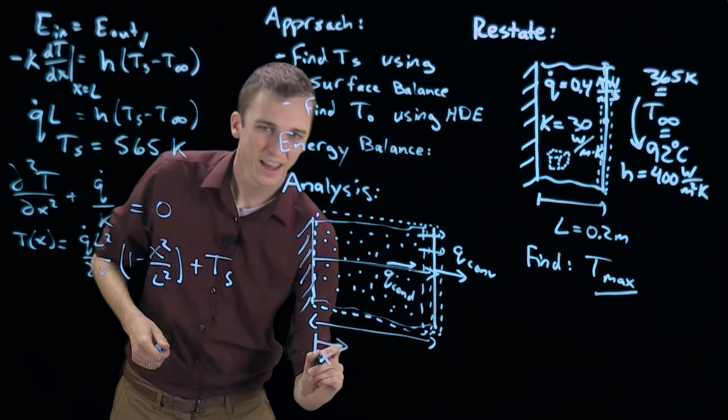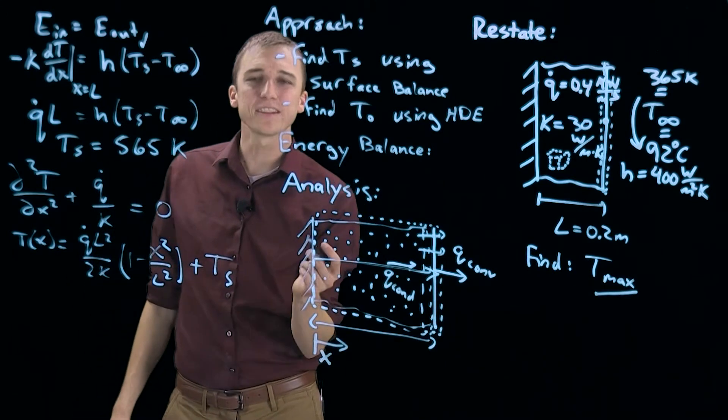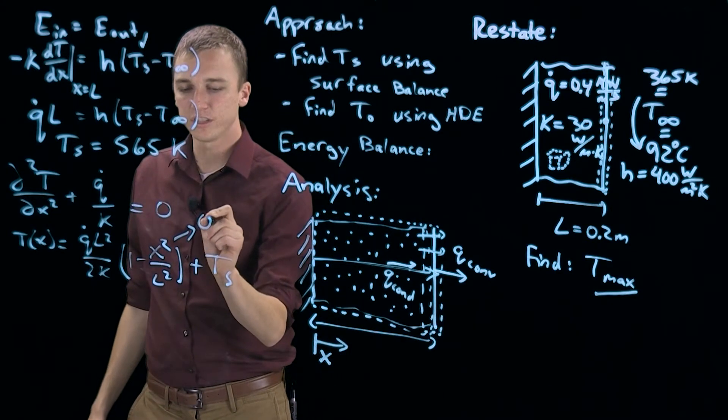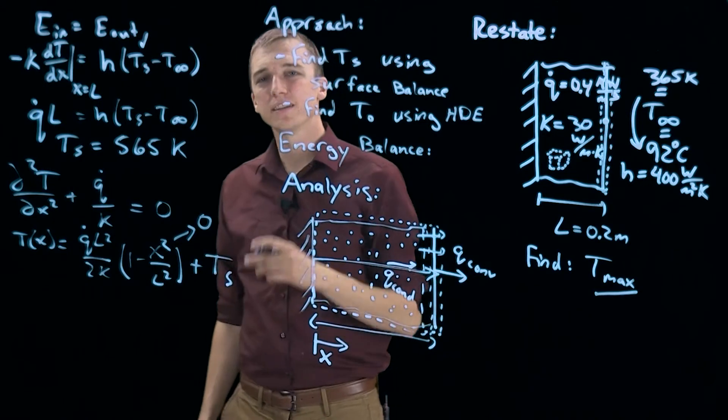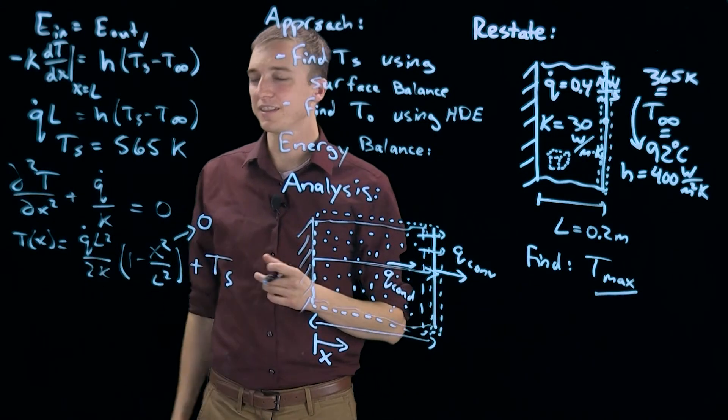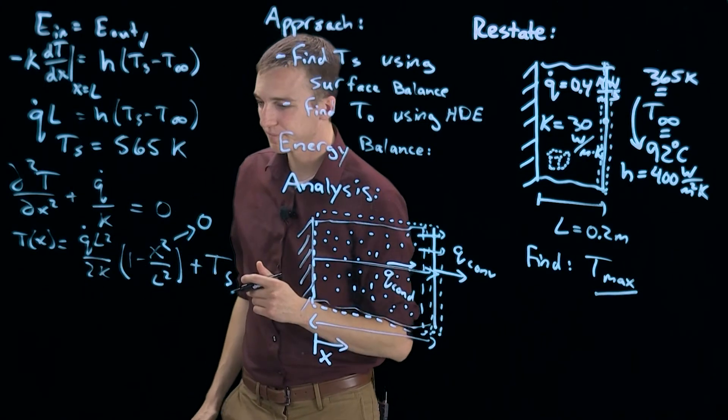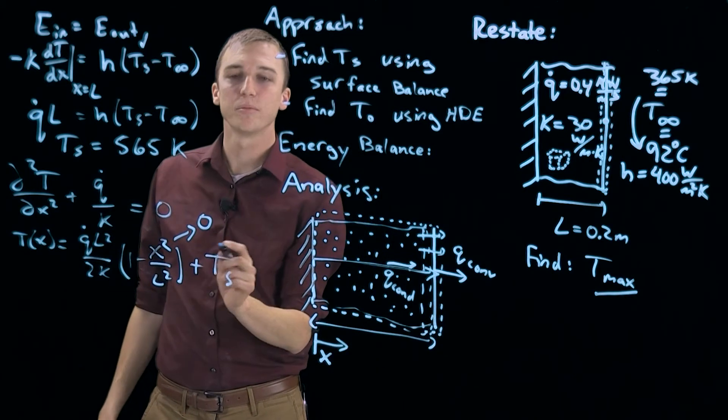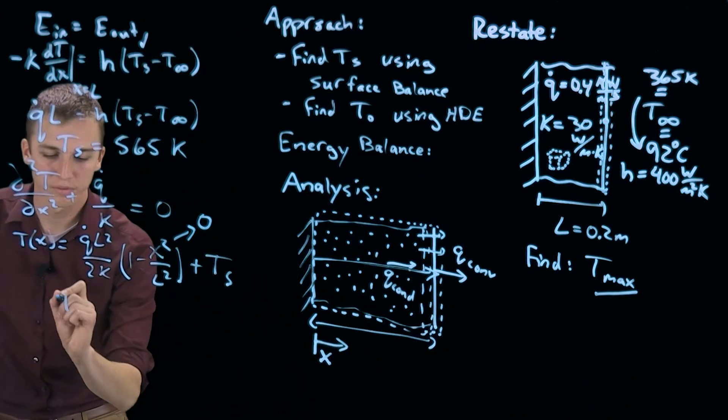We know that x has its origin here at the insulated wall. So by plugging in x of 0, we can find the temperature at the insulated wall which would be the maximum temperature. When you plug in 0, you are just left with q dot l squared over 2k plus Ts. So when we evaluate that, T of 0, we get 832 kelvin.